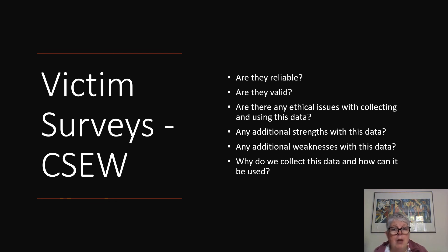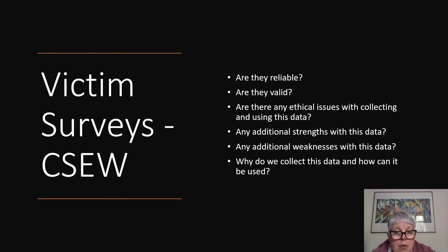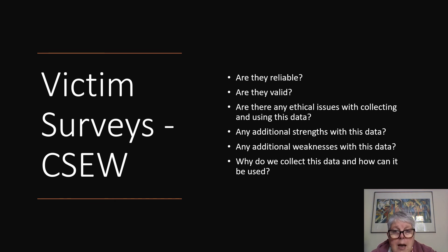In terms of additional strengths and weaknesses, at this point you should be making comparisons to the police recorded figures. We collect this data because it fills in the gaps for the government, the police service, councils, and schools — where the police statistics are not giving us a full and complete picture of crime in society. Victim surveys also ask people about their fears about crime, which is additional useful information. Overall, you are writing about two sets of statistics, you need to use reliability and validity correctly, and most of all you need to give yourself enough time to do this section — otherwise you're missing out on a fairly straightforward six marks. Good luck.